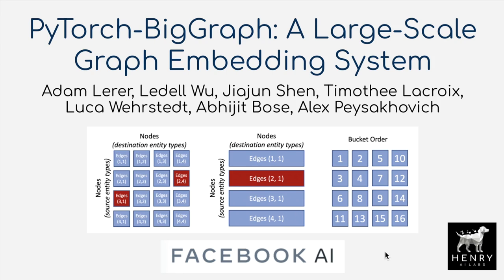This video will provide an overview of graph embedding learning. This is where we learn vector representations of nodes in a graph based on the connectivity of the graph, and maybe having different kinds of relations in the graphs as well. For example, in Wikipedia knowledge graphs, we have different kinds of relations that connect the source and destination nodes, so we have all sorts of different kinds of graph structure to learn these vector representations from.